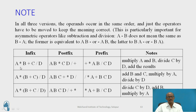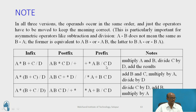Consider the expression A into B plus C divided by D: multiply A and B plus C, divide C by D, and add the results. The same in postfix is written as A B * C D / +, and in prefix as + * A B / C D. This is how the remaining expressions are evaluated.